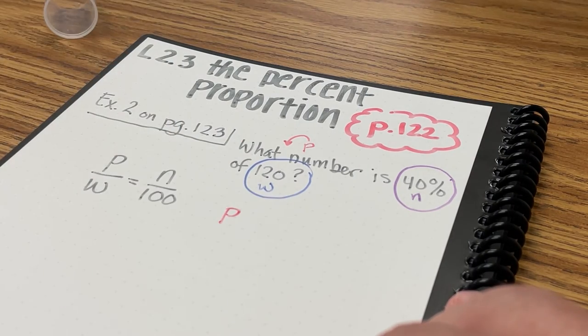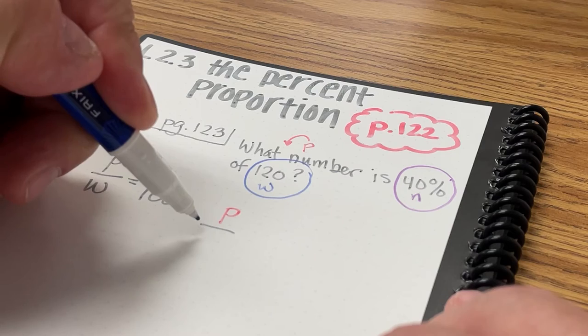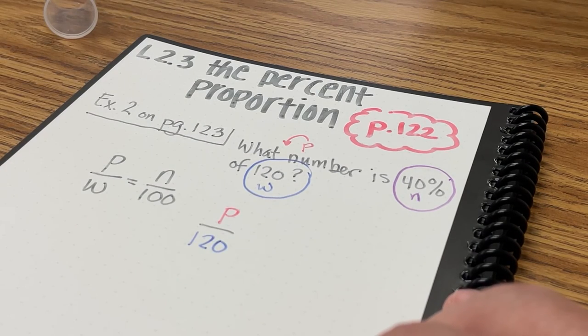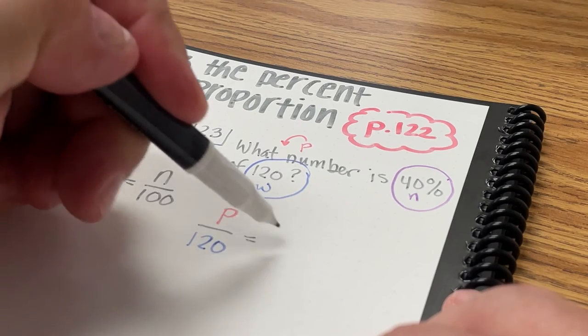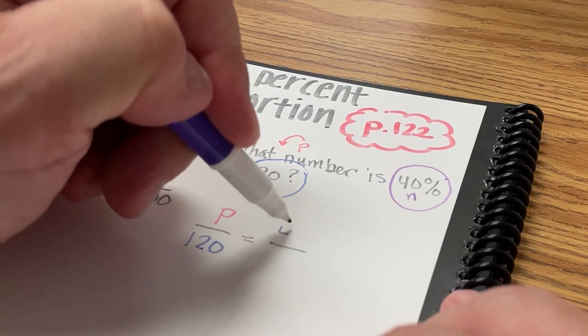So I'm going to rewrite the proportion with the values that I know and my unknown, which is P, the part. So I'll have P over 120, and that equals 40 over 100.